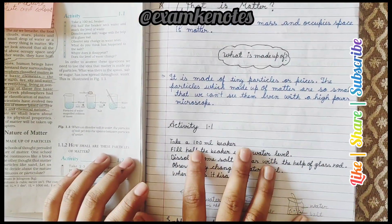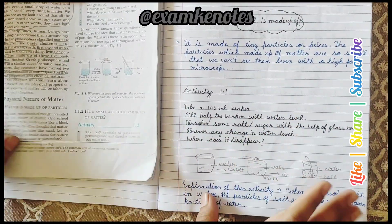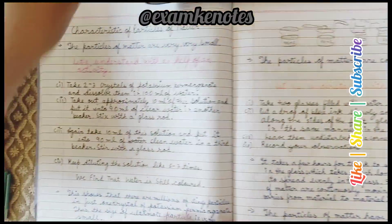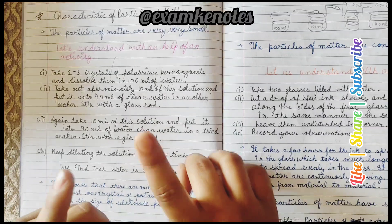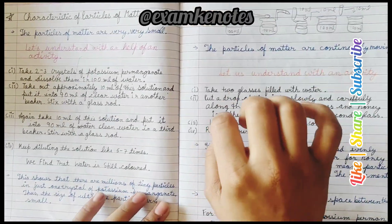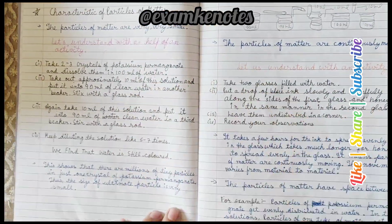Like Activity 1.1 from NCERT. Then we come to the second part. There are 4 characteristics of matter. The particles of matter are very, very small. The particles of matter are continuously moving, with activities and examples also.